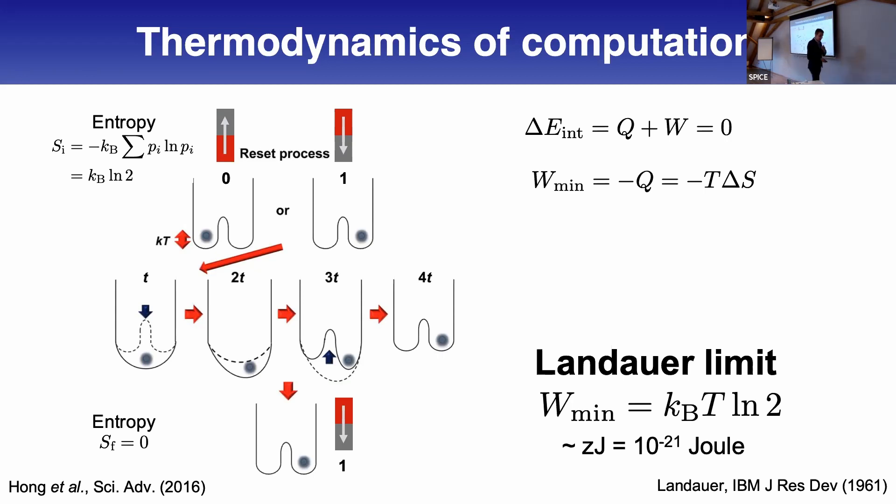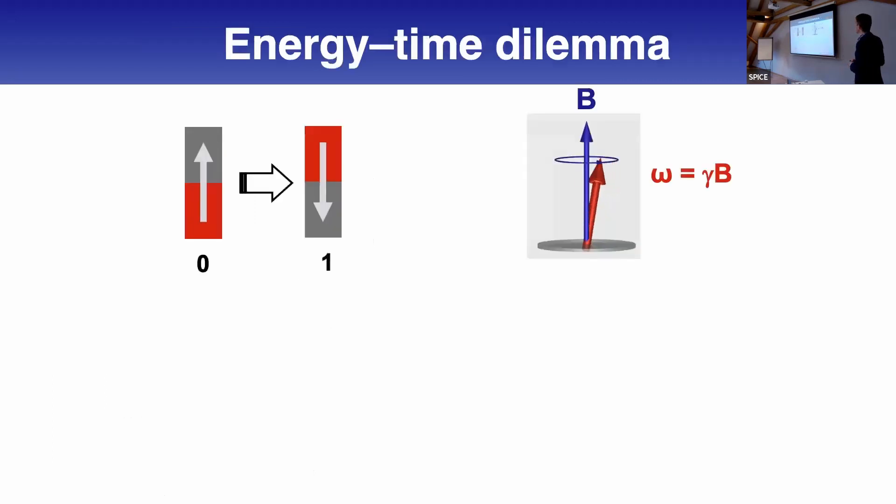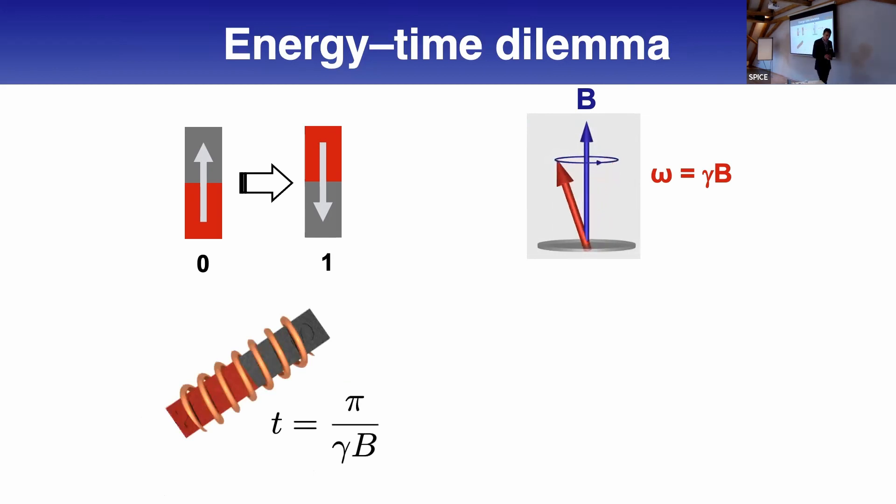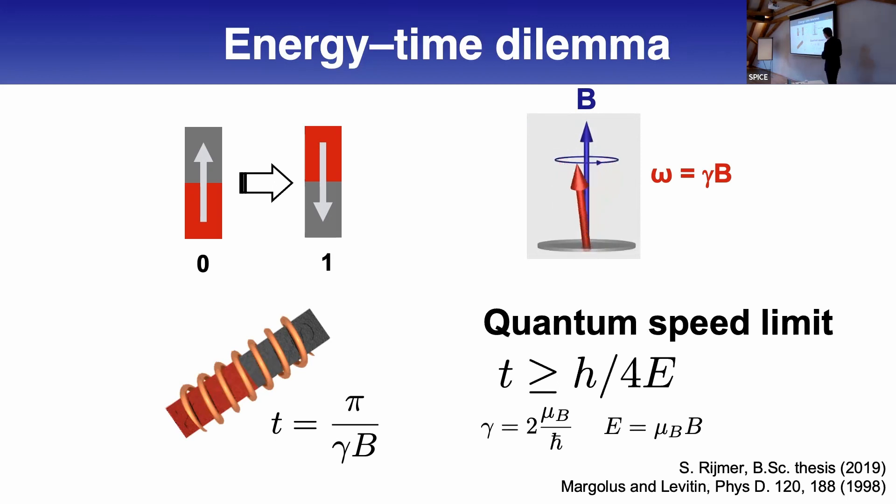We don't have to do that. We can also take a quantum mechanical look at that, and even in quantum mechanics we have some dilemma between energy and speed. We can understand this from a magnetization up and down picture. The fastest way to switch magnetization is precessional switching, where the timescale is half the precession period.